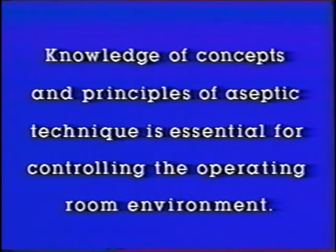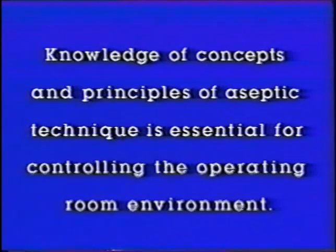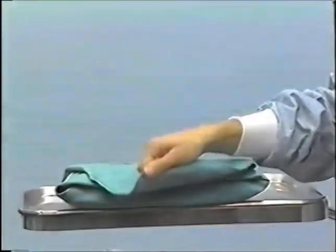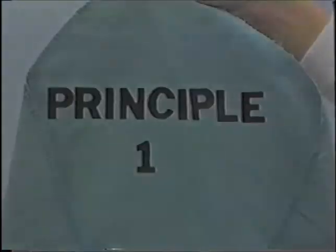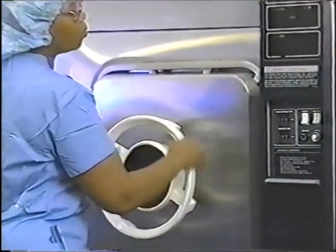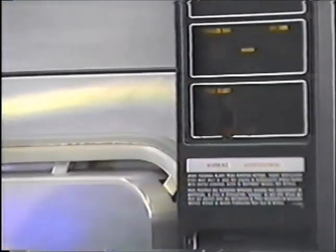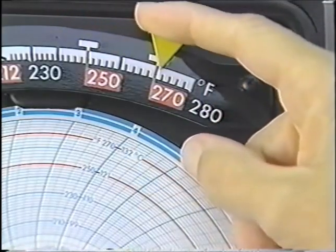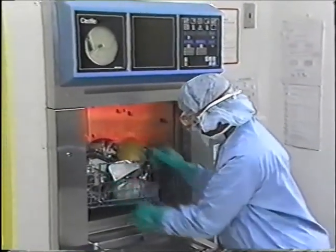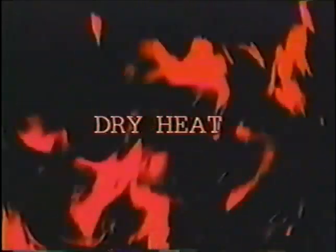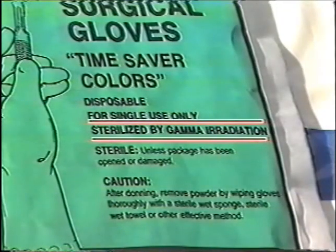Knowledge of concepts and principles of aseptic technique is essential for controlling the operating room environment. There are eight principles of aseptic or sterile technique. Principle number one: all items used within a sterile field must be sterile. There are many ways to kill microorganisms to provide sterile instruments or supplies. Sterilizing agents include steam, ethylene oxide gas, liquid chemicals, dry heat, and radiation.